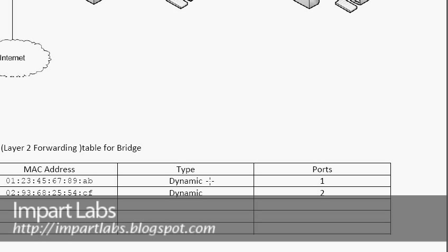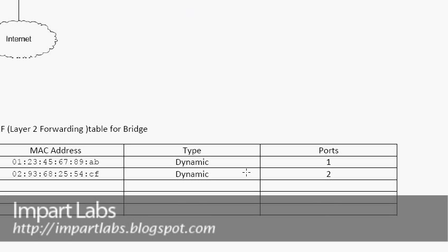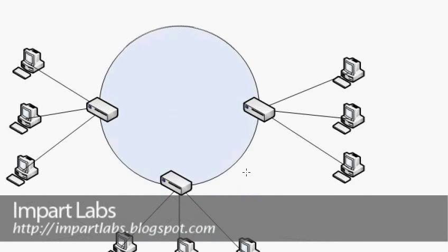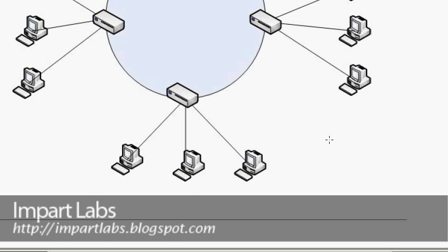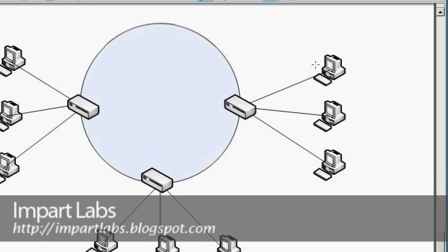Let's talk about a couple of issues that might happen when we have bridges in our network. Here we have a more complicated network with three bridges, and each of the bridges has three workstations connected to it.